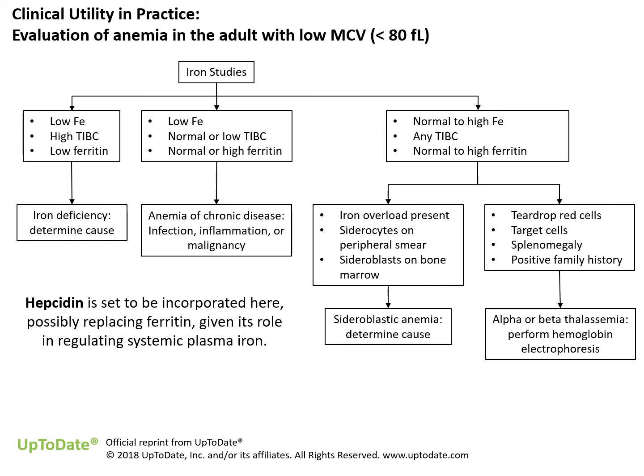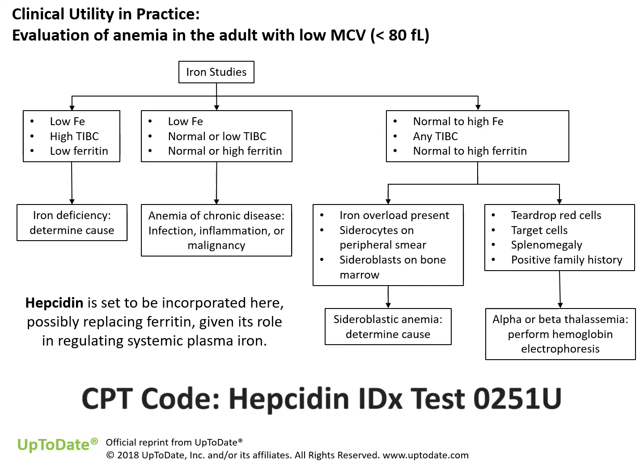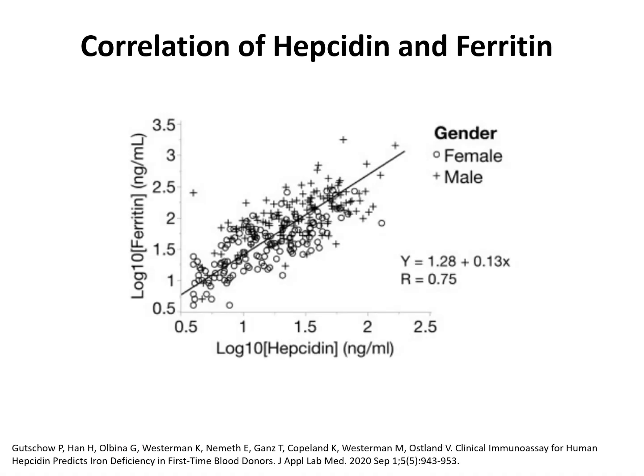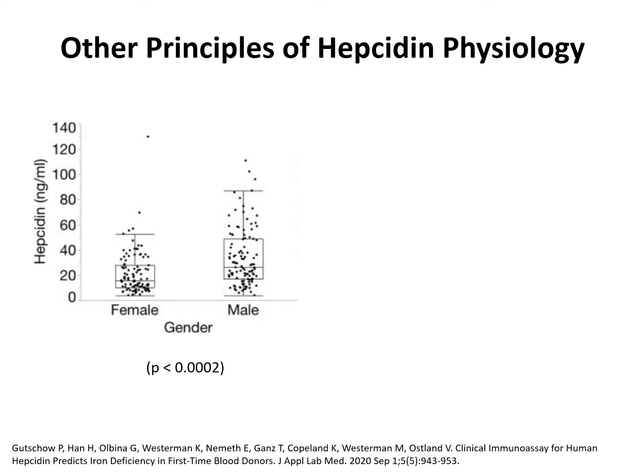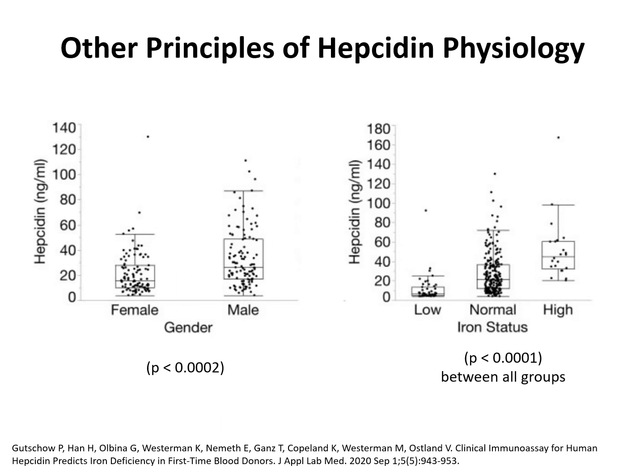Hepcidin can replace the basic indication granted by ferritin due to the high degree of correlation between hepcidin and ferritin. Beyond this correlation, here are other principles of hepcidin physiology: in healthy donors, hepcidin levels are higher in men than in women. Hepcidin can stratify patients by iron status — when hepcidin is low, the patient's iron status is low, and as hepcidin increases, so does the iron status. The intrinsic hepcidin diagnostic has also been issued a CPT code for Medicare reimbursement.